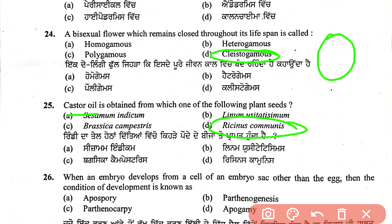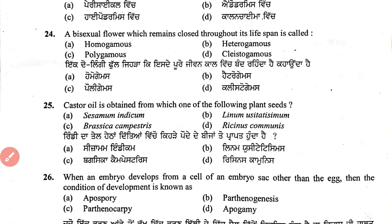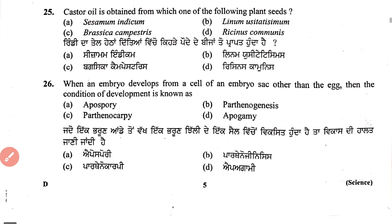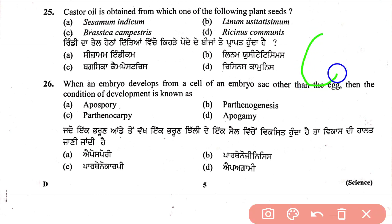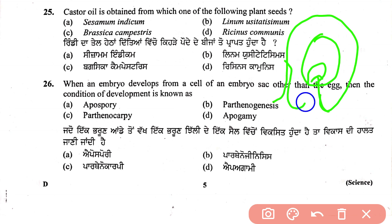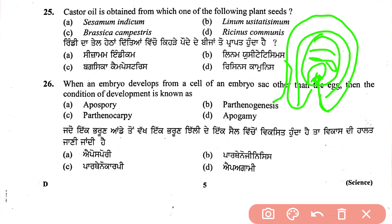When an embryo develops from a cell of the embryo sac other than the egg, then this condition is known as — the question asks about embryo development from non-egg cells of the embryo sac — this condition is known as parthenocarpy.